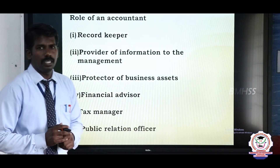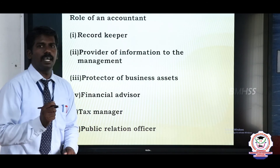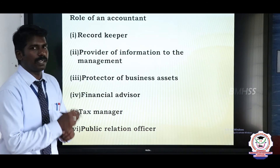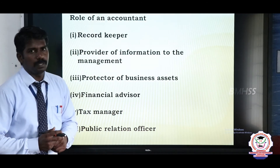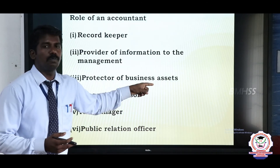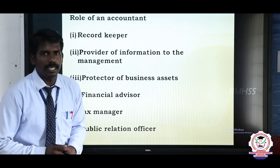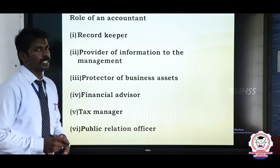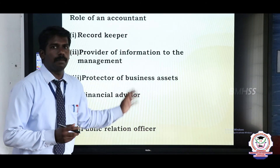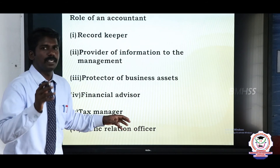Next, the role of the accountant. First, record keeper — he keeps a record of each and every transaction and records it in the books of accounts. Second, provider of information to management — whenever management needs information, the accountant provides the right information at the right time so management can take correct decisions. Third, protector of business assets — the accountant records the position of all assets and liabilities and safeguards the assets, thereby also protecting shareholders.